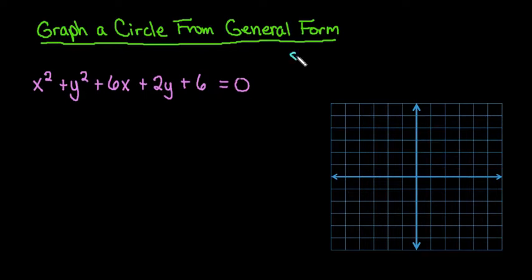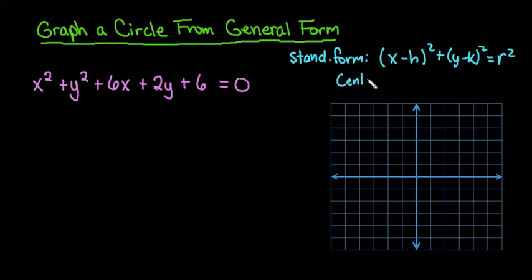Remember that standard form is (x-h)² + (y-k)² = r². And the reason we want to get it into this form is because then we can find our center, which is going to be at (h,k), and the radius is going to be r. So we want to get it into this form first. In order to do that, we have to do what's called completing the square.